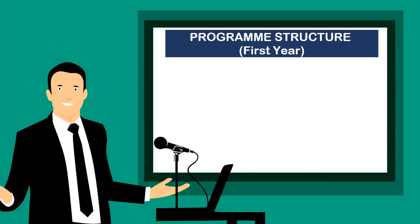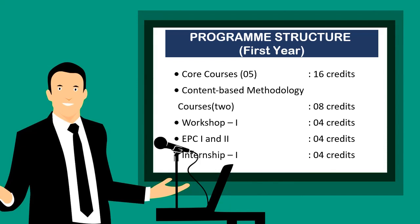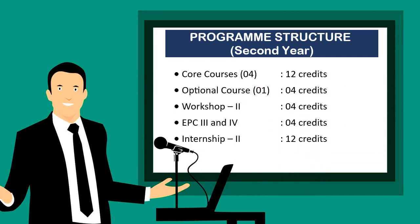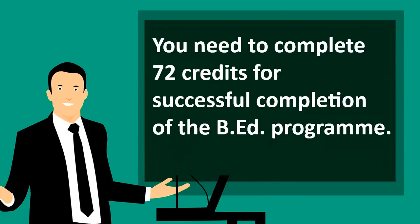Let's see what the program structure is. In the first year, we basically offer five core courses, two content-based methodology courses (subject teaching courses), one workshop of four credits, one EPC course one and EPC course two — two courses of four credits — and an internship of four weeks worth four credits. In the second year, we offer four core courses of 12 credits, one optional course of four credits, one workshop of four credits, two EPC courses of two credits each (totaling four credits), and an internship of 12 credits. In first year and second year combined, you have to complete a minimum of 72 credits for the successful completion of the B.Ed program.